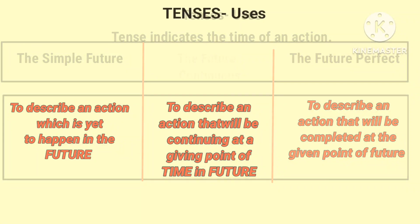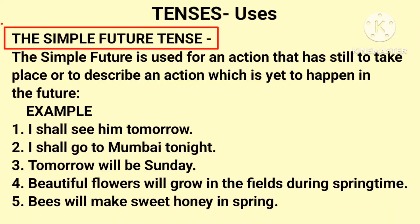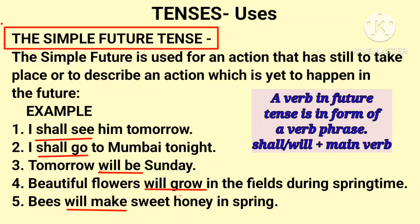The first one, the simple future tense. It is used for an action that has still to take place, or to describe an action which is yet to happen in the future. For example: I shall see him tomorrow. I shall go to Mumbai tonight. Tomorrow will be Sunday. Beautiful flowers will grow in the fields during springtime. Bees will make sweet honey in spring.